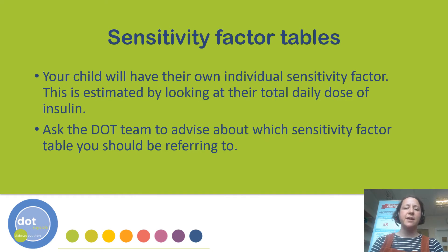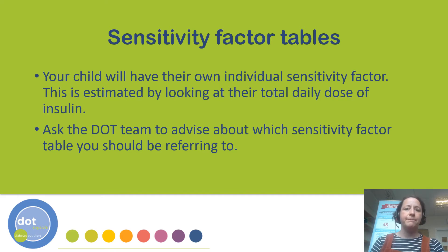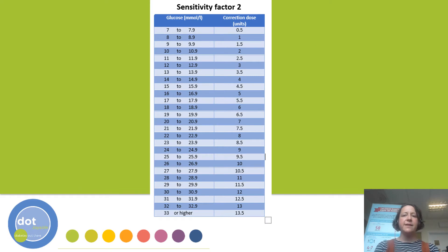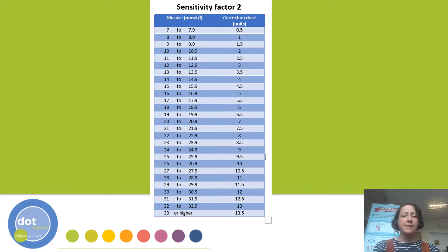A child's sensitivity factor is determined by their total daily dose of insulin. Ask one of the DOT team members to advise you about which sensitivity factor table you should refer to for your child. Generally, we would like you to refer to the same sensitivity factor table for all meals of the day. The sensitivity factor tables are designed to bring glucose down to a target value of 6, and on the left-hand side are glucose readings, with the suggested correction dose on the right.